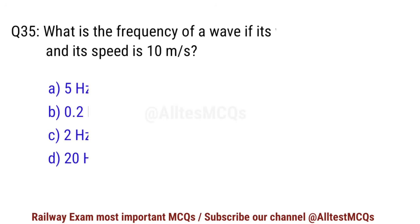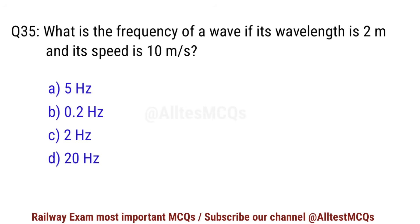Q35. What is the frequency of a wave if its wavelength is 2 m and its speed is 10 m per second? Right option is A. 5 Hz.